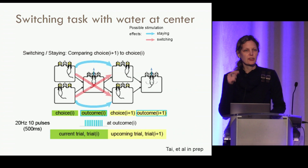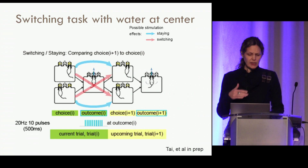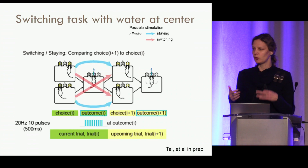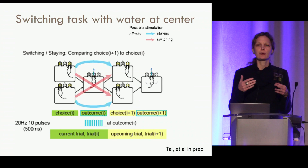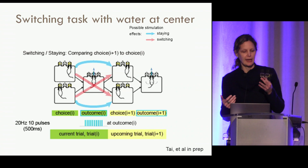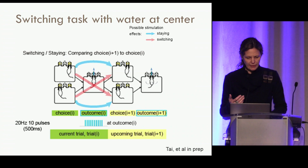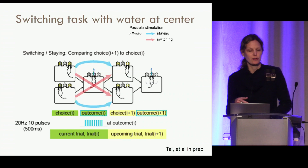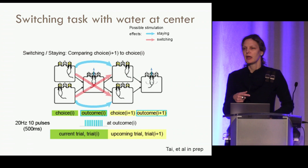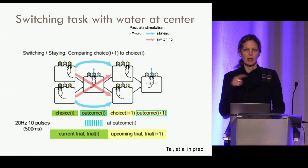We chose this design because there's no information about which side is good at that point. We were interested in whether we could reinforce an action trace — 'what did I just do and where did I come from?' — using spiny projection neuron stimulation in the ventral striatum. What we measure is the upcoming trial: does the animal go back out to the same port it came from, or to a different port? The blue arcs indicate staying with the same port, while the red arrows indicate switching to the other side on the next trial.